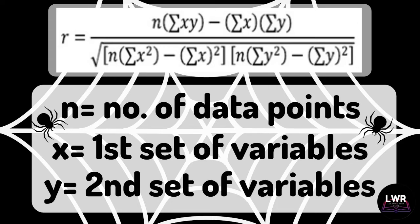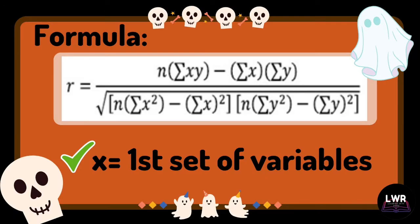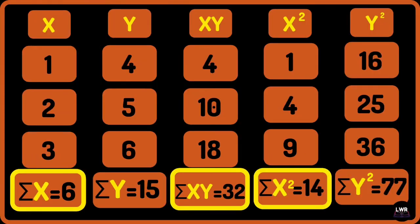Let us check if we completed all the needed data. We already have the first set of variables: the summation of x, which is 6; summation xy is equal to 32, which also contains a combination of x and y variables; and the summation of x squared, which is 14.